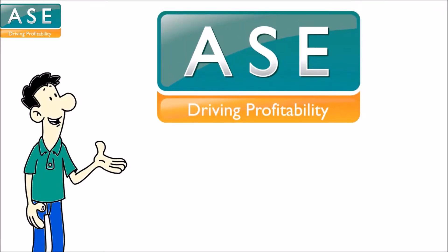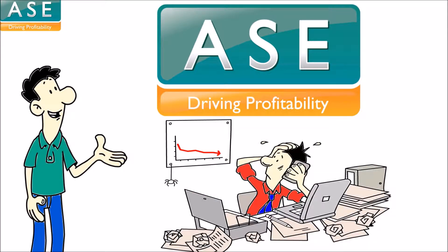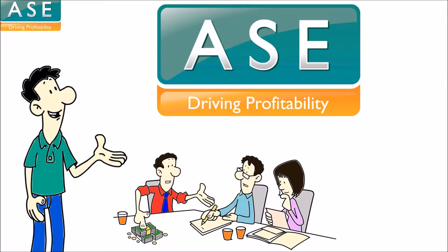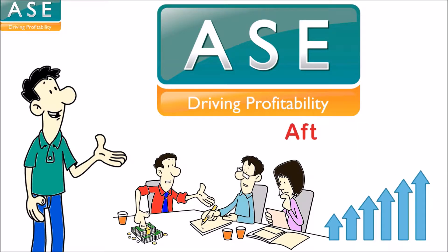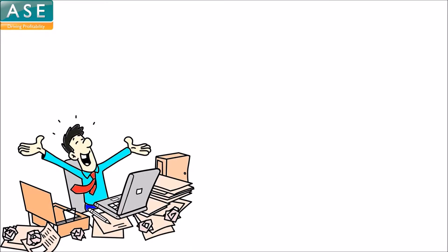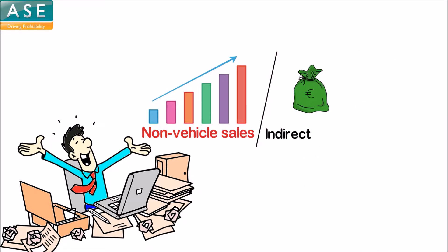Bob turned to ASE. ASE explained that to make his dealership less vulnerable to swings in vehicle sales performance, Bob should try and cover the majority of the overheads of the dealership with after-sales department profits. Bob now understands the calculation: operating profits from non-vehicle sales departments divided by indirect expenses, times 100.